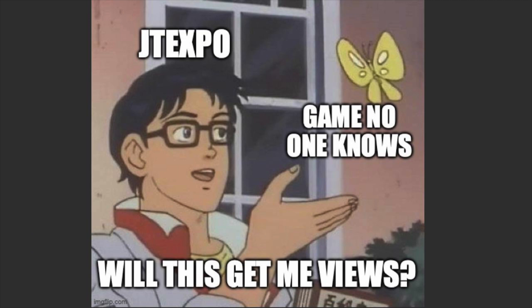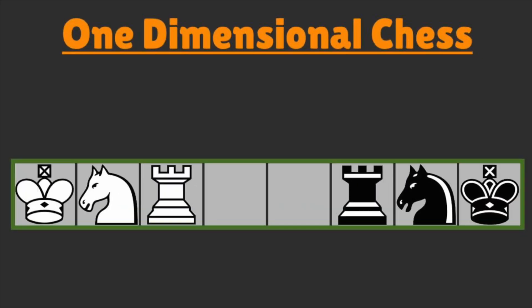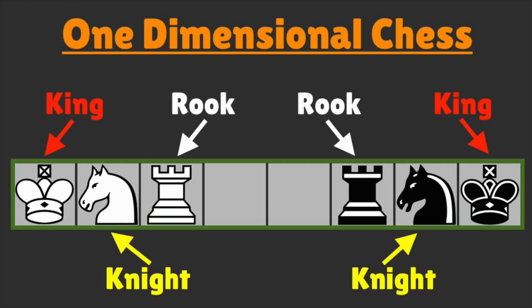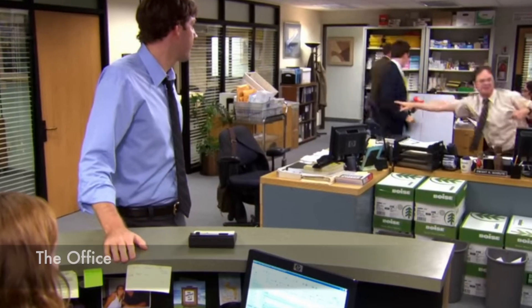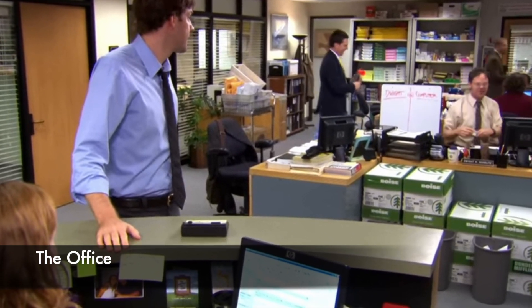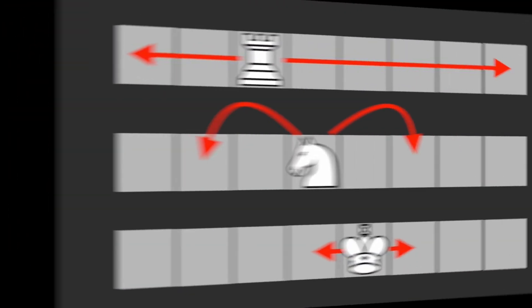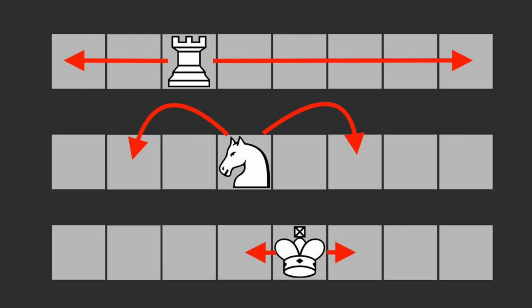You might be wondering, what is 1D chess? One dimensional chess is a 1x8 board that consists of a king, knight, and rook on both sides. Just like chess, the objective is to checkmate the enemy and prove intellectual dominance. All the pieces in 1D chess move just like their 2D counterparts, with the exception of the knight who can now only jump over a tile at a time.